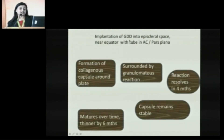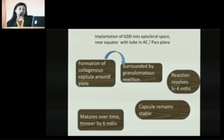When you implant the GDD into the episcleral space near the equator with the tube either in the anterior chamber or in the pars plana, there begins the formation of a collagenous capsule. Because this silicon plate attracts plasma and proteins, which leads to a granulomatous reaction and capsule formation. This capsule is surrounded by a granulomatous reaction. This reaction resolves within four months, and the capsule gradually becomes firm and stabilized.